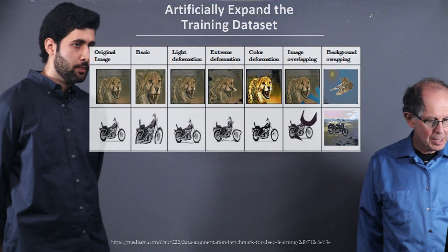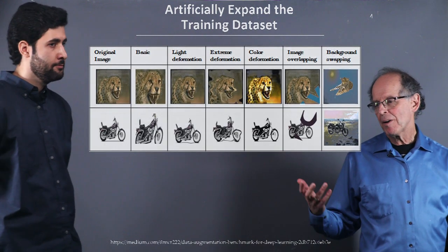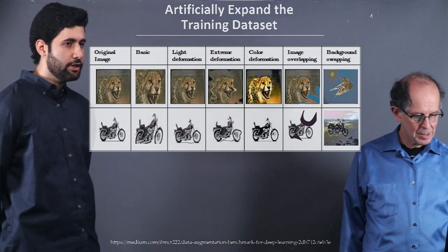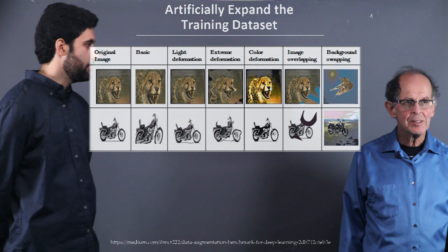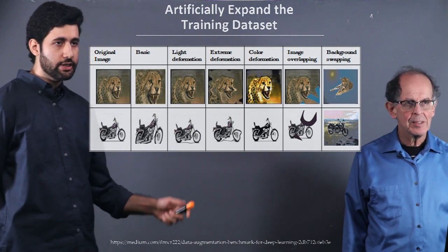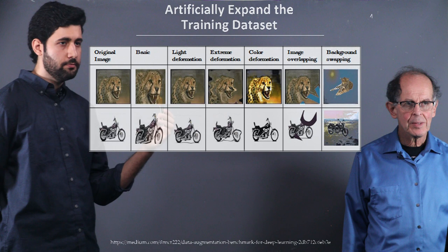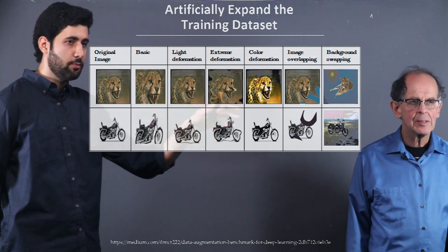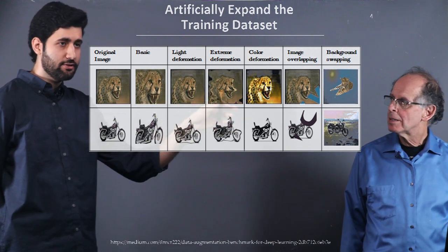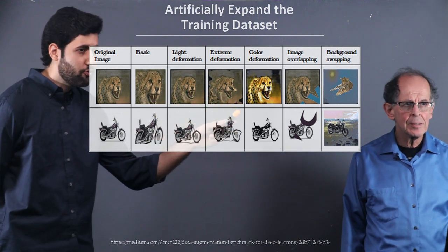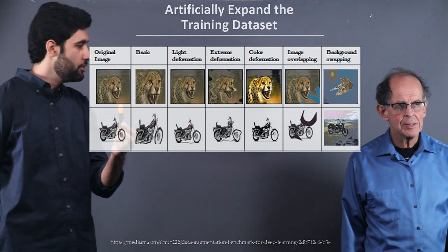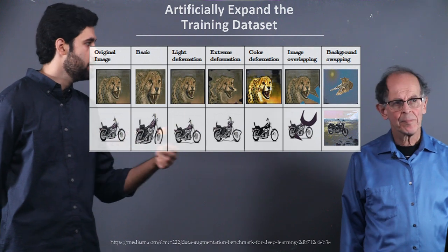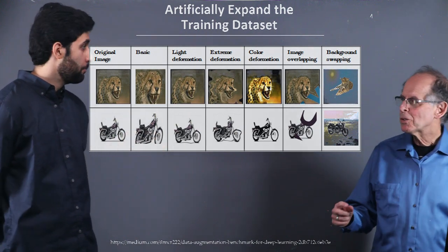Let's look at another set of augmentation for creating artificial data. There are different innovative ways to artificially expand our training set. For example, using different transformations, light deformation, decomposition, elastic deformation, and image overlapping. Here, if we change the background of an image, it still would be a tiger. By doing that, we increase the size of our training set.